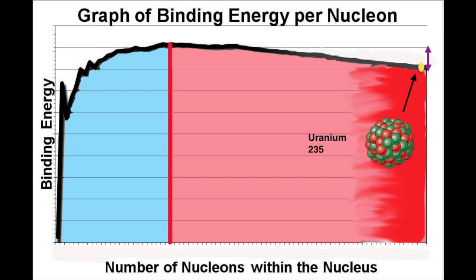Looking back at the graph, the arrow shows the amount of energy that would be released by splitting this atom. And that doesn't look very big on the scale of this graph. But remember that bit of energy is energy per nucleon. That bit of energy, when you split one atom, is multiplied by 235, the number of nucleons within the uranium atom.